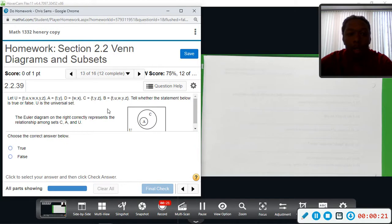And we want to tell whether the statement below is true or false. U is the universal set, so it contains everything in question. And then we have this Euler diagram. It looks like Euler, E-U-L-E-R, but it's pronounced Euler. He is the person who has come up with these sets and Venn diagrams.